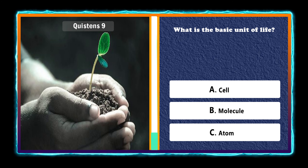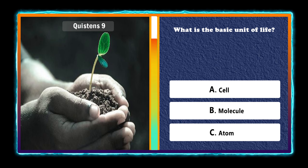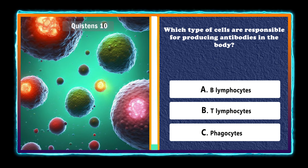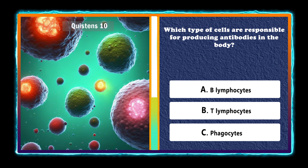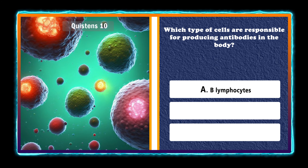What is the basic unit of life? Cell. Which type of cells are responsible for producing antibodies in the body? B lymphocytes.